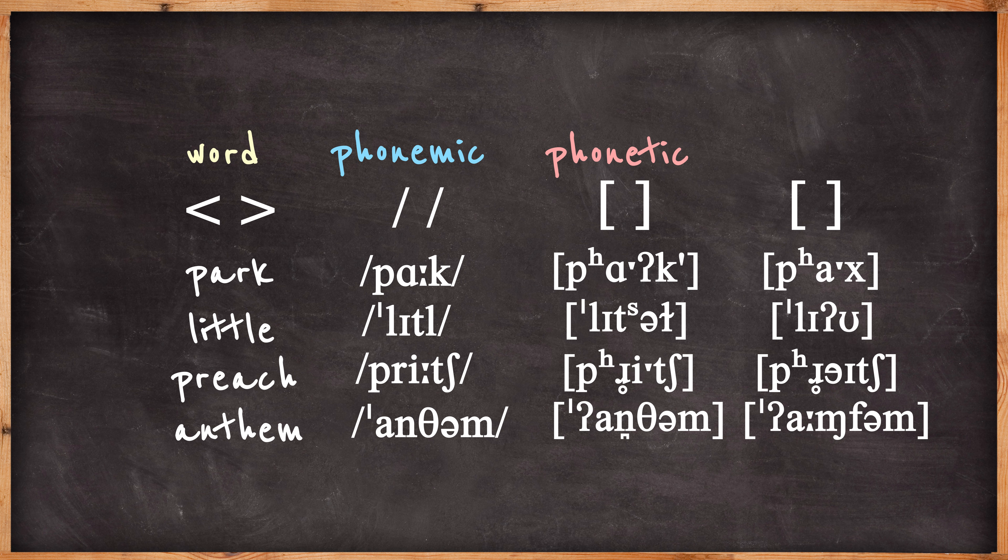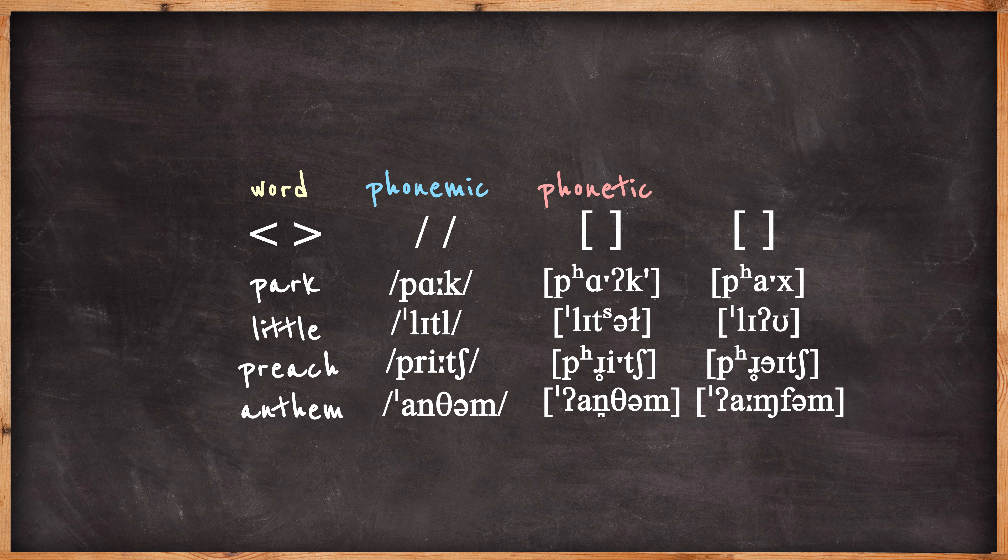So there you have it. Perhaps the easiest way to think about these different transcriptions is in terms of weight. A phonemic transcription is light. It uses the least possible space to show how a word is pronounced. Whereas a phonetic transcription is heavy. It is packed with however much ornamentation and detail is required for its purpose. Thanks for watching!